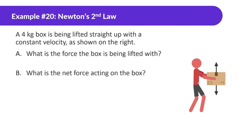Number 20. A 4-kilogram box is being lifted straight up with a constant velocity as shown on the right. What is the force the box is being lifted with? We don't know what the force applied is — that's what we're looking for — but we do know what force of gravity is. It's mass times gravity: 4 times 10, which is 40 Newtons.